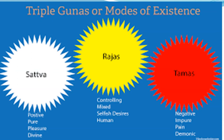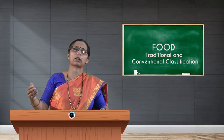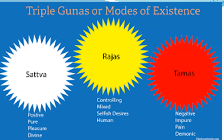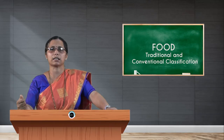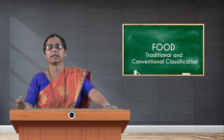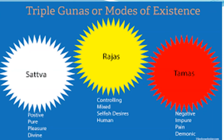When we say it is Sattva quality, it denotes a positive, pure effect over the body. It is considered to be divine food that gives pleasure to the person when eaten — that is the property of Sattva Guna in food. Rajas food has a stimulating effect over the body; it is considered to control and stimulate many of the body's functions.